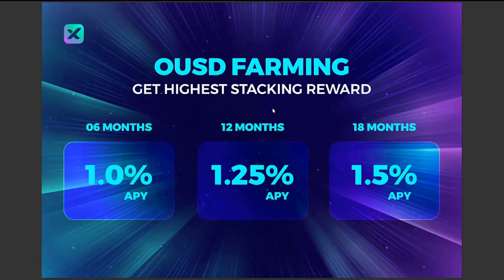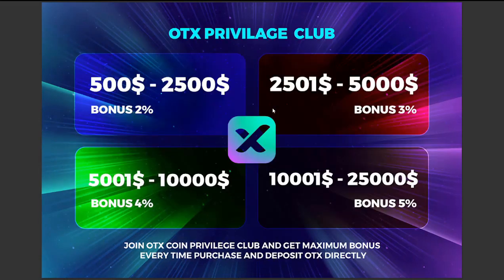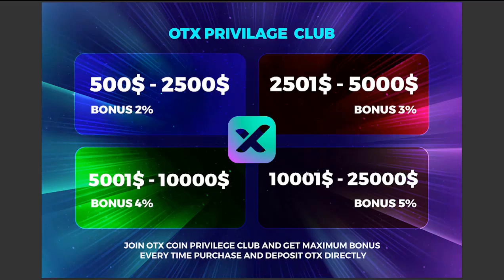Here we have information about host farming and the OTX Privilege Club. The bonuses range from $500 to $2,500, and you can gain a 2% bonus. Join the OTX Coin Privilege Club and get maximum bonuses. On the right side, you can find more bonuses — for example, 3% bonus and more on every purchase and deposit of OTX directly.